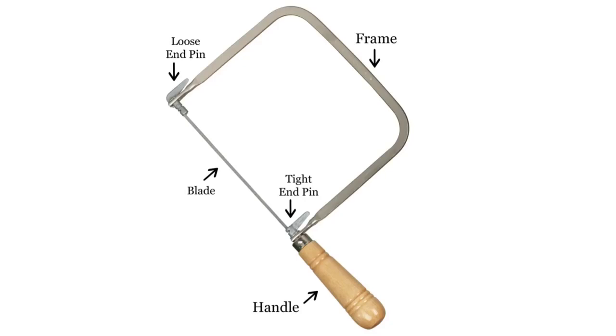a tight end pin that should remain secure at all times, a blade that has teeth that will point out away from the saw and down towards the handle, a loose end pin that will move freely without the blade, and a metal frame.